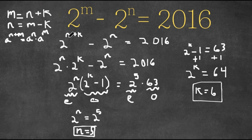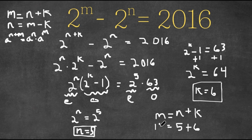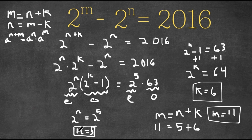So we know that m is equal to n plus k. We already have the values for n and k: n is 5 and k is 6, meaning m is equal to 5 plus 6, which is 11. So m is 11. Now we have our values for n and m.